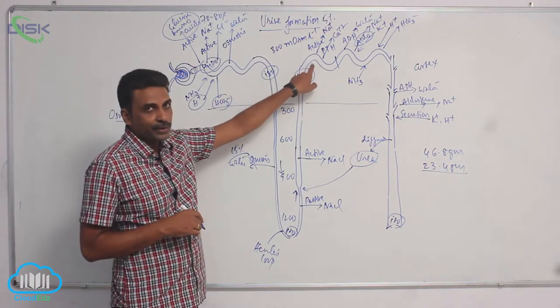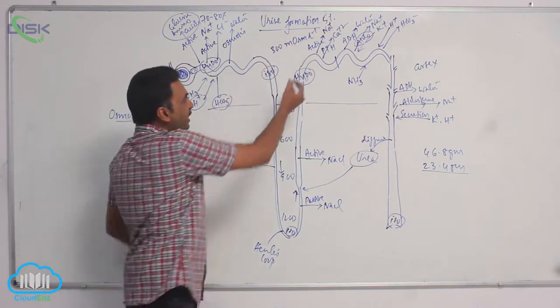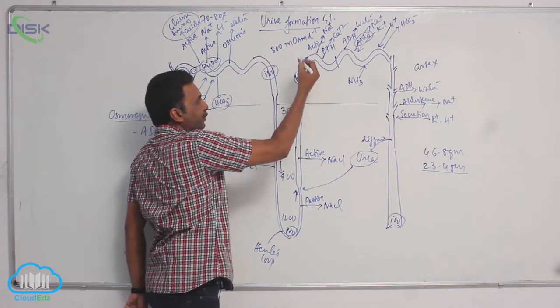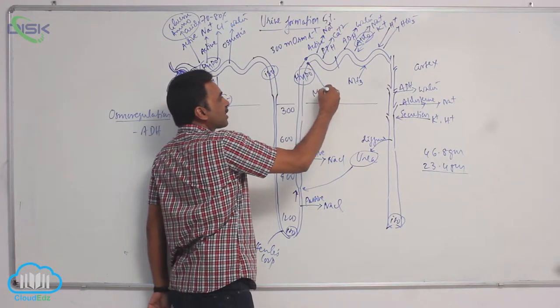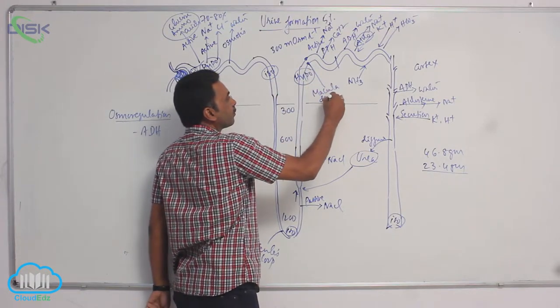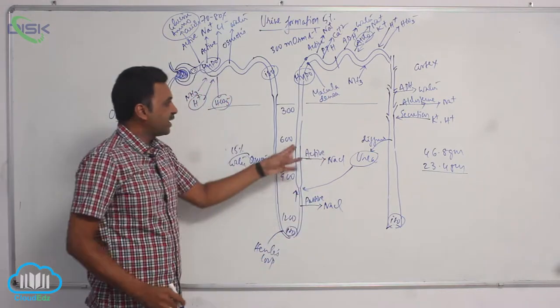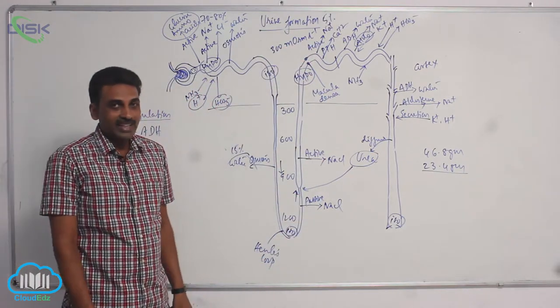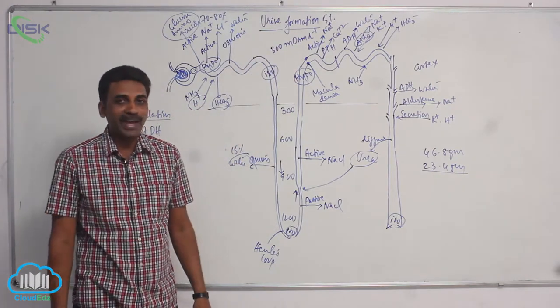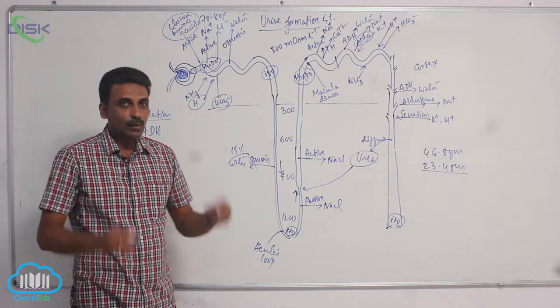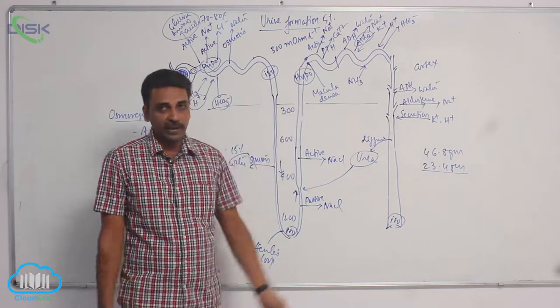In the distal convoluted tubule, at the beginning of the distal convoluted tubule, you can see macular densa. At the ending of ascending limb or at the beginning of the distal convoluted tubule, you can see a group of closely packed cells. The closely packed cells are called as macular densa.